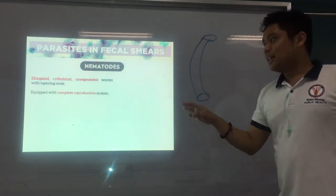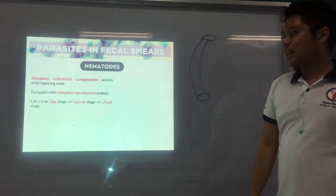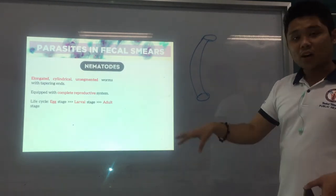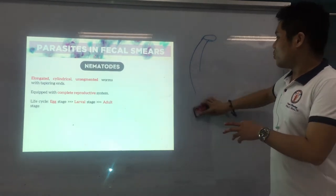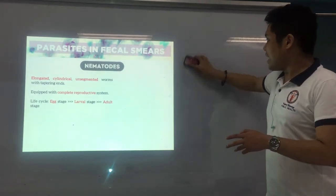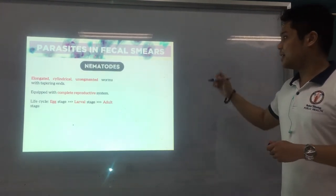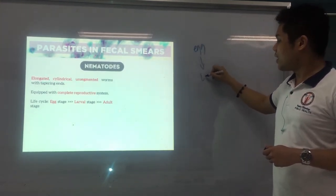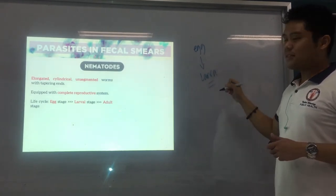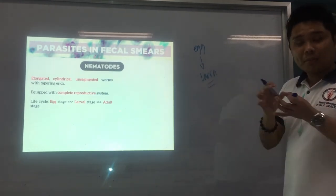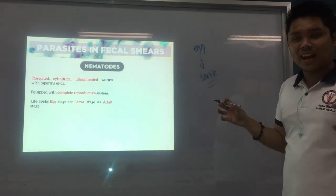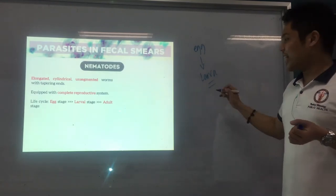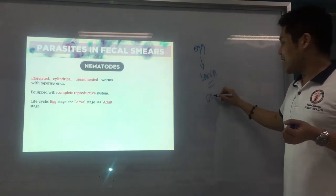They have a complete reproductive system. The life cycle consists of the egg, larva, and adult. Larva is like the baby or teenage stage — it looks like a worm but is not yet fully matured.